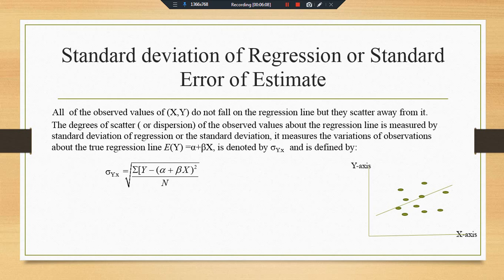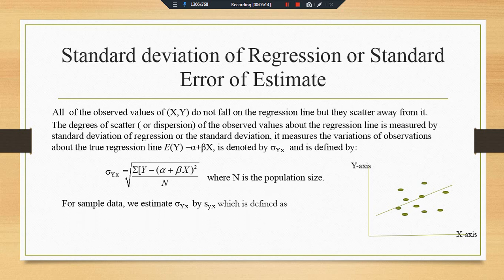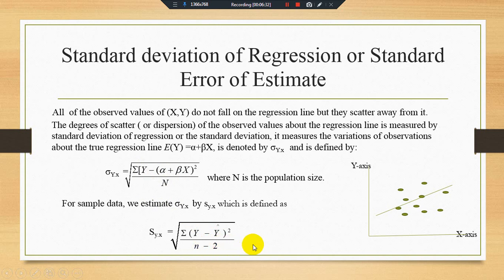In real life we mainly depend on sample studies. For the sample case, the formula for the sample standard error is the square root of summation (Y minus Ŷ) squared divided by n minus 2. For the population we divide by all N observations, but in the sample case we divide by n minus 2. This estimated standard error will be a true representative of the population regression line, making our estimated regression line unbiased.